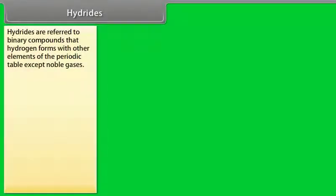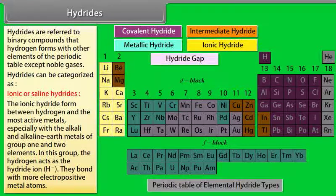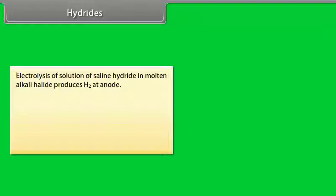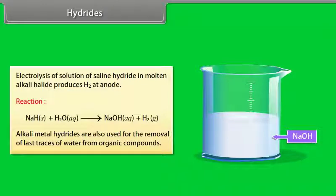Hydrides. Hydrides are referred to binary compounds that hydrogen forms with other elements of the periodic table except noble gases. Hydrides can be categorized as ionic or saline hydrides. The ionic hydride form between hydrogen and the most active metals, especially with the alkali and alkaline earth metals of group 1 and 2 elements. In this group, the hydrogen acts as the hydride ion. They bond with more electropositive metal atoms. Electrolysis of solution of saline hydride in molten alkali halide produces H2 at anode. Alkali metal hydrides are also used for the removal of last traces of water from organic compounds.